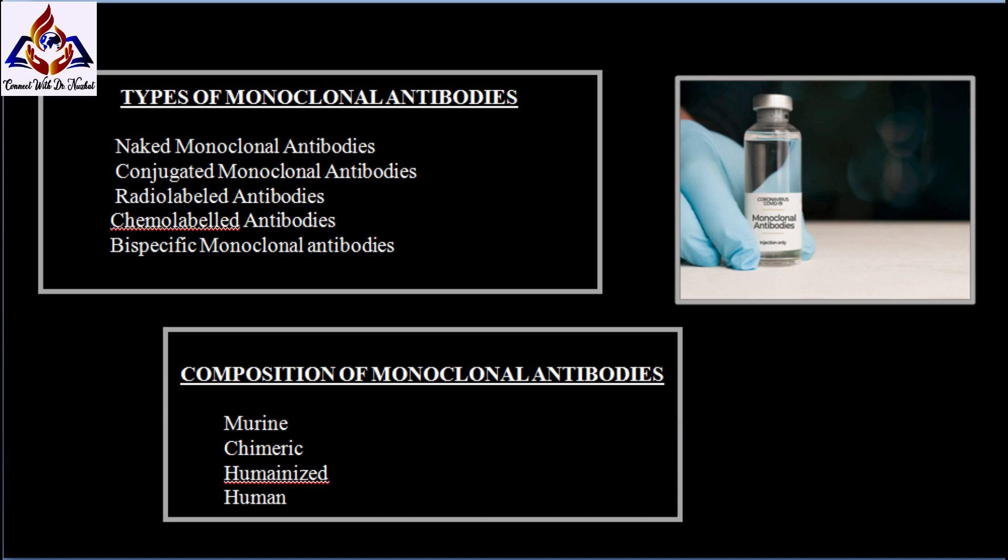Next are conjugated monoclonal antibodies. These are combined with a chemotherapy drug or a radioactive particle. These monoclonal antibodies are used as a homing device to take one of these substances directly to the cancer cells. The monoclonal antibody circulates throughout the body until it can find and hook onto the target antigen.